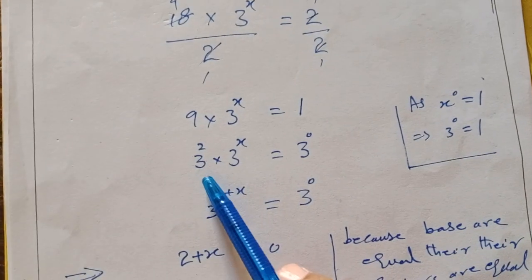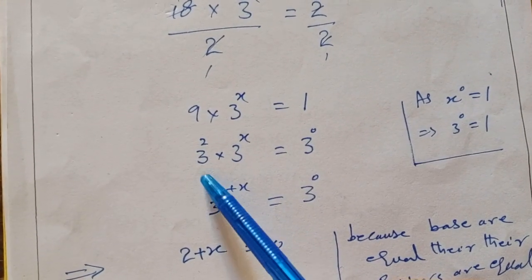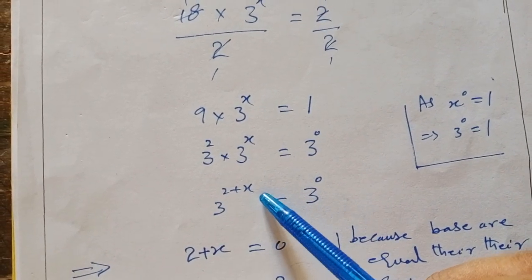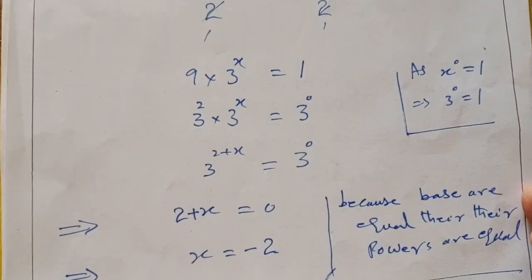When bases are same, we apply the power rules. 3 to the power 2 plus x is equal to 3 to the power 0.